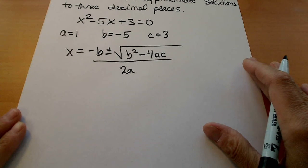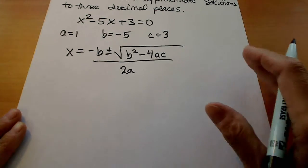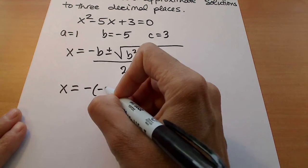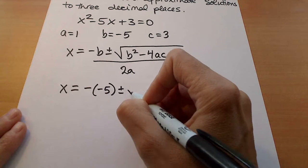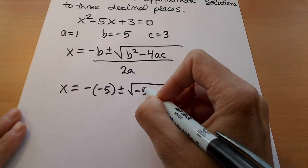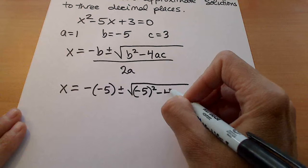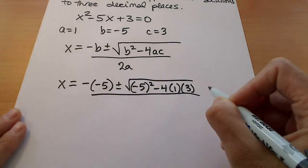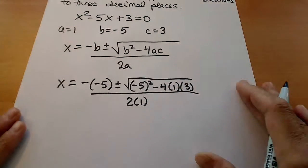Once we've identified those a, b, and c, then we need to plug those values in. So we're looking here at the opposite of negative 5 plus or minus the square root of negative 5 squared minus 4 times a is 1 and c is 3. And that's all over 2 times 1.